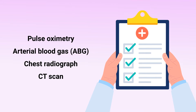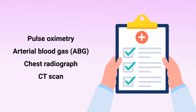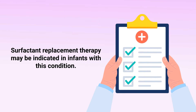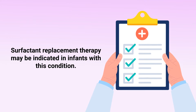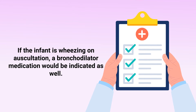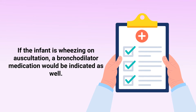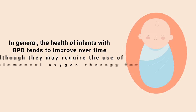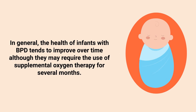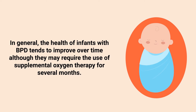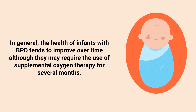Surfactant replacement therapy may be indicated in infants with this condition. If the infant is wheezing on auscultation, a bronchodilator medication would be indicated as well. In general, the health of infants with bronchopulmonary dysplasia tends to improve over time, although they may require the use of supplemental oxygen therapy for several months.